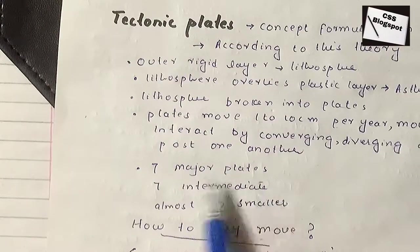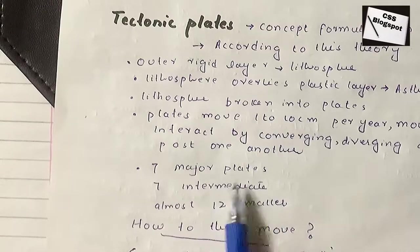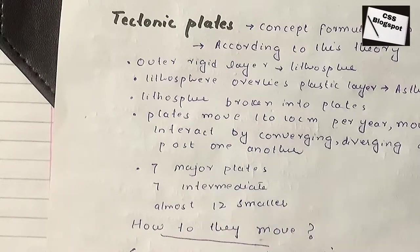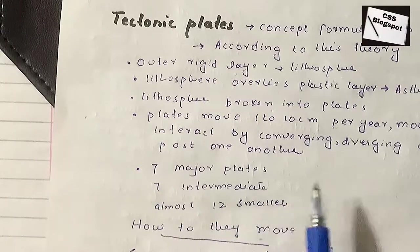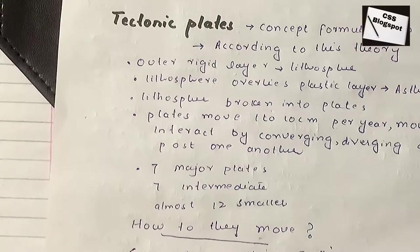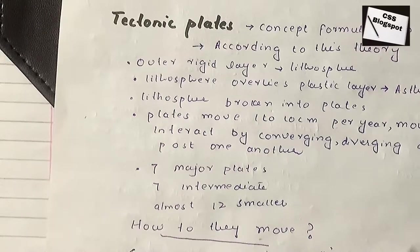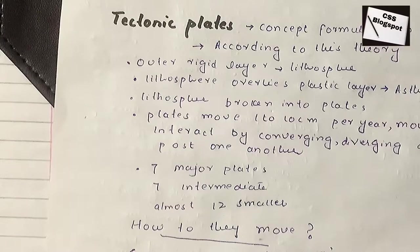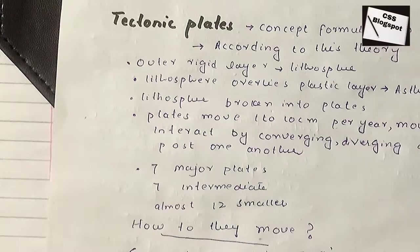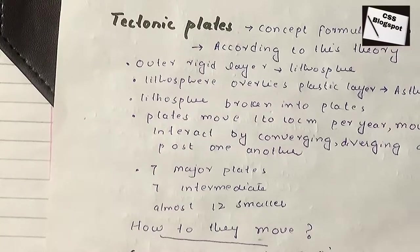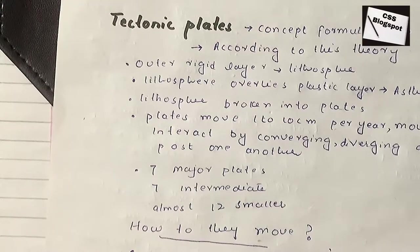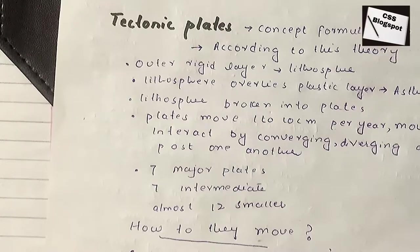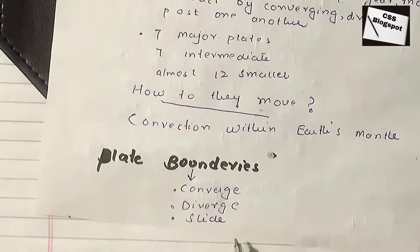Tectonic plates include seven major plates, several intermediate-sized plates, and almost a dozen smaller plates. They move based on convection phenomena. On this basis, we have divergent boundaries, convergent boundaries, and transform boundaries.